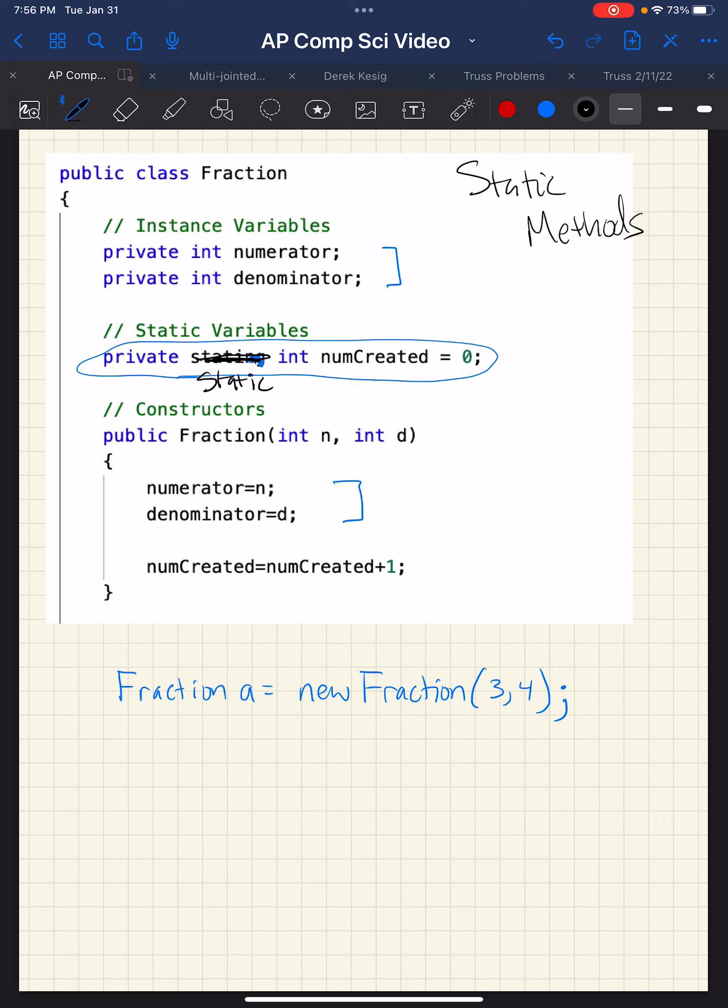That should be static int num created. That is a static variable because it's something that's keeping track of how many total fractions get created, how many times the fraction constructor here gets called. And it gets incremented. That's not a static method. So we'll go through here and I'm going to rewrite that just to make it clear that that's static instead of stating.